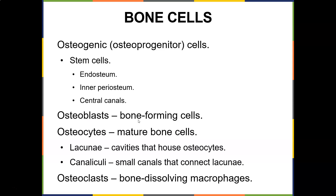Osteoblasts are the bone-forming cells that synthesize the organic matter of the matrix and help mineralize the bone. They're non-mitotic — they don't go through mitosis — so the only source of new osteoblasts is osteogenic stem cells. Stress and fractures stimulate accelerated mitosis of osteogenic cells, rapidly increasing osteoblast numbers. This is why walking and putting stress on your bones is important for osteoporosis prevention — if you don't use it, you lose it.